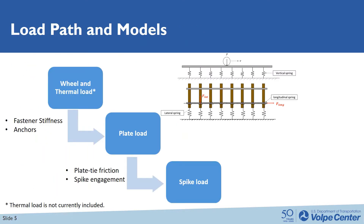This slide shows the load path and the respective models we used for each path. From the rail to the plate, there is wheel and thermal load applied on top of the rail. The wheel and thermal load then distributes to the plate — we call it plate load. How the load is distributed to the plate depends on the fastener stiffness and whether anchors exist or not. To estimate the magnitude of the plate load, we use an analytic model composed of vertical, lateral, and longitudinal spring series to calculate the plate load.